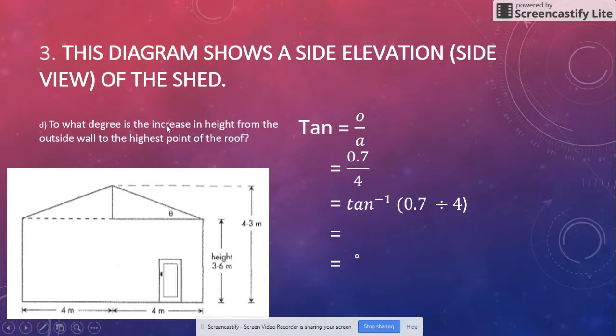To what degree is the increase in height from the outside wall? They want to know what this degree is here. We know this is 4 and we know what this is over here because we just worked it out. So we go tan = opposite over adjacent.